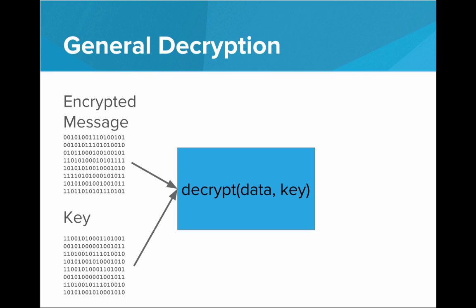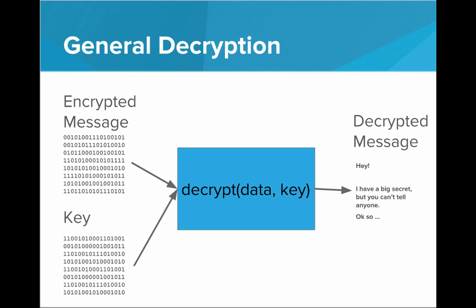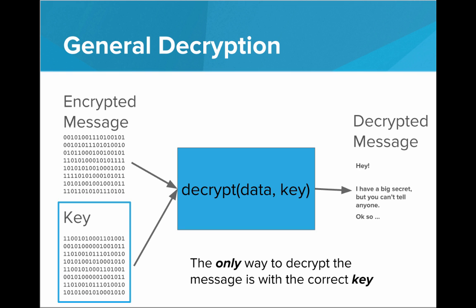Then, if we have that encrypted message and we have the exact same key, we can put that into a decrypt function — a decryption algorithm — and the result will be the original decrypted message. What's important is the only way to decrypt the message is by sending the correct key into the decrypt function. If we try to decrypt with the wrong key, we won't get the proper message — again, we'll get nonsense. So there are two things: the data and the key. The encryption and the decryption both need a key.